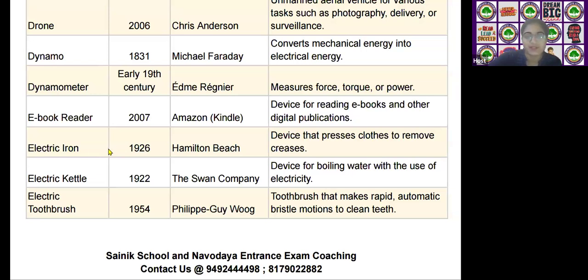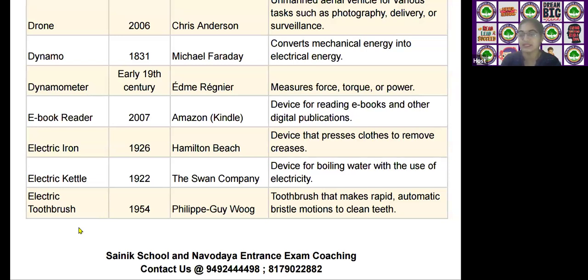The next scientific device is the electric toothbrush, invented by Phillip Gyrobrush in the year 1954. It is used as a toothbrush that makes rapid, automatic bristle motions to clean teeth.